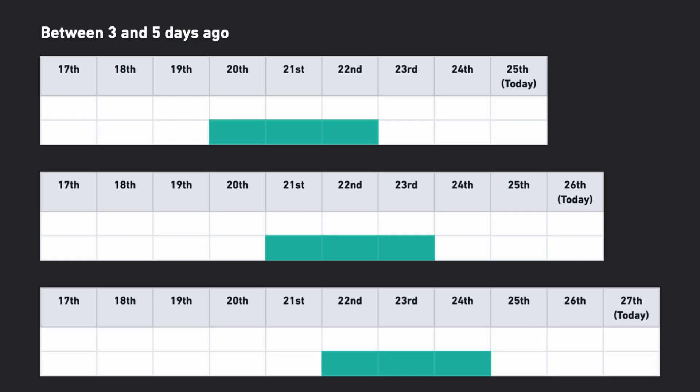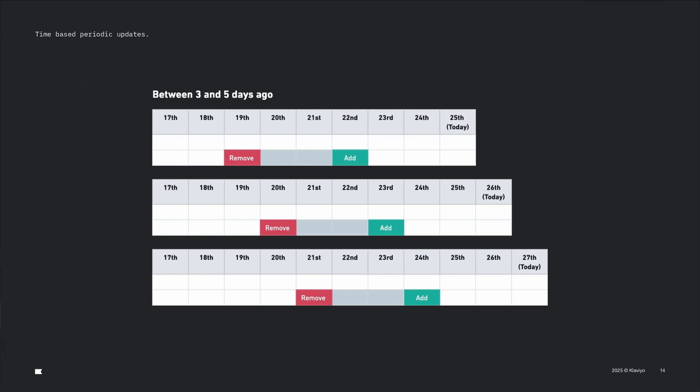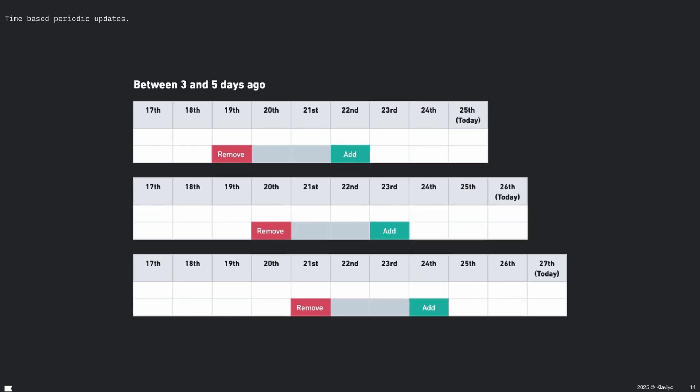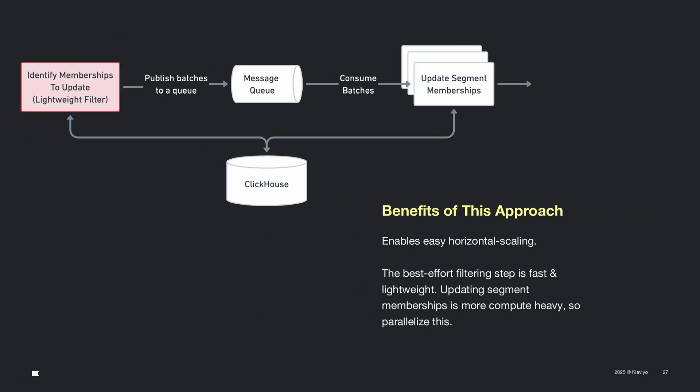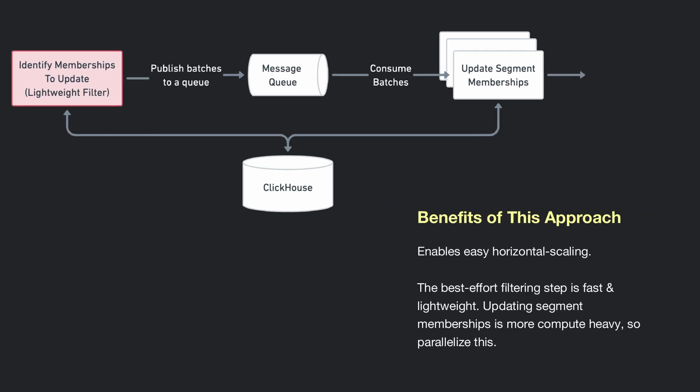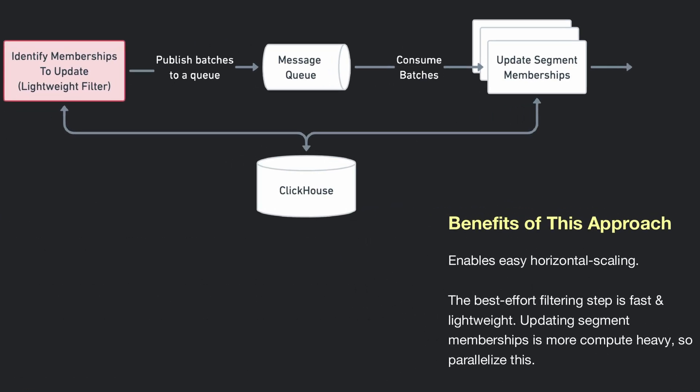Reprocessing everything on a fixed schedule wasted a lot of compute. They now identify and update only segments that need changing rather than computing all of them. This design scales effortlessly with light filtering upfront and heavier updates run in parallel. And if you want to learn more about ClickHouse use cases, you'll want to check out this video next.